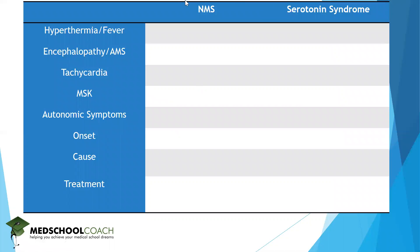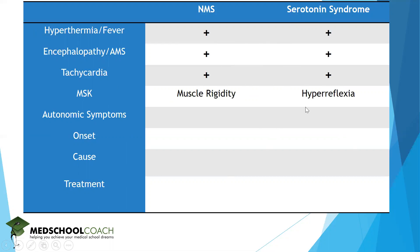It's useful to go through a comparison chart to look at the similarities, but more importantly, the differences. Both conditions share hyperthermia/fever, encephalopathy or altered mental status, and tachycardia — so these are not useful for differentiation. For MSK findings, NMS presents with muscle rigidity, whereas serotonin syndrome presents with hyperreflexia due to neuromuscular hyperactivity. For autonomic symptoms, NMS has none, while serotonin syndrome features diarrhea and diaphoresis.